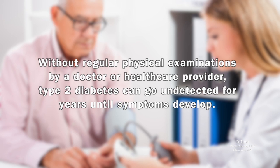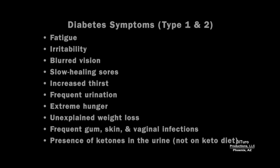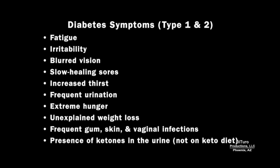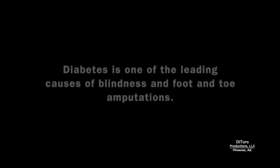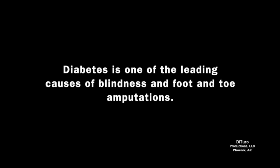Without regular physical examinations, type 2 diabetes can go undetected for years until symptoms develop. Symptoms are the same for type 1 and type 2 and include fatigue, blurred vision, increased thirst, frequent urination, extreme hunger, unexplained weight loss, frequent infections, and the presence of ketones in the urine. Diabetes is one of the leading causes of blindness and foot and toe amputations.